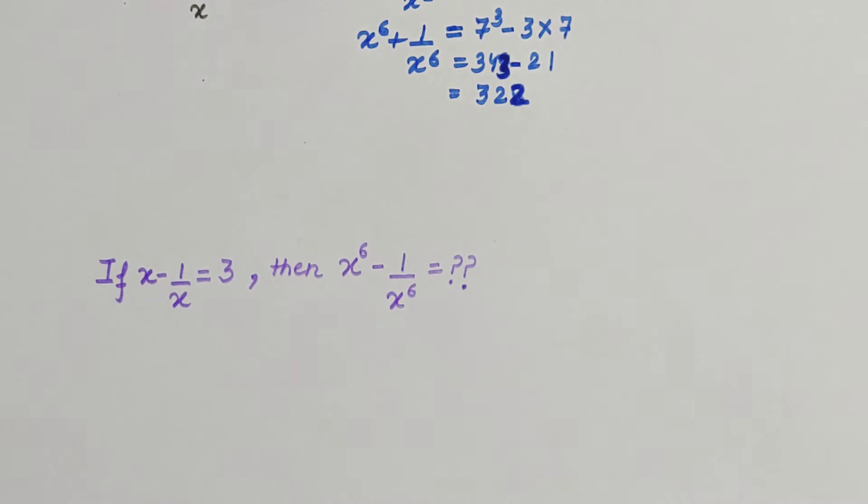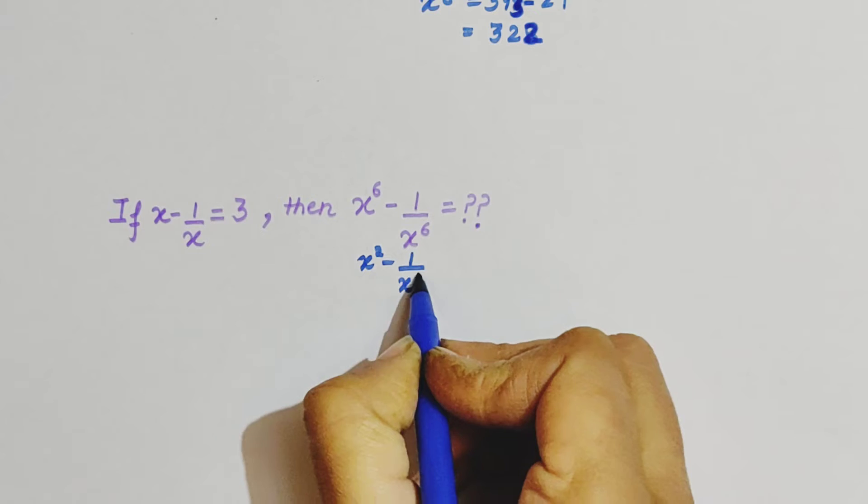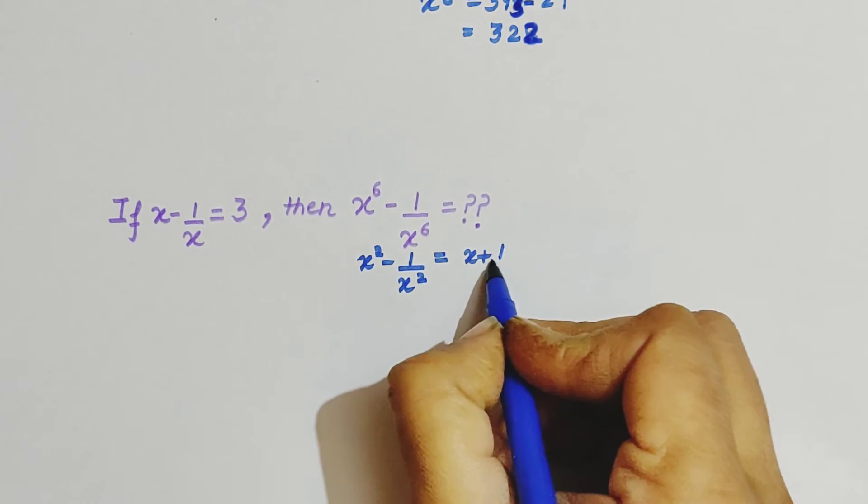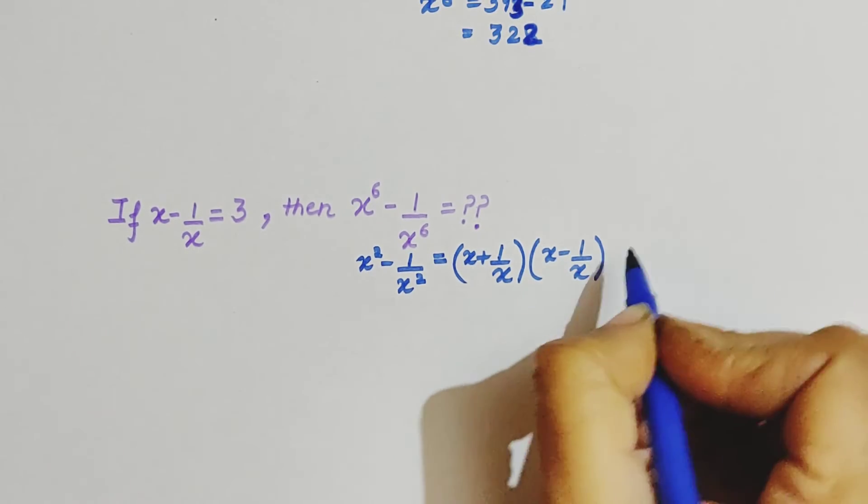If there is minus instead of plus, then what will we do? First you will find x square minus 1 over x square, and this will be x plus 1 over x times x minus 1 over x.